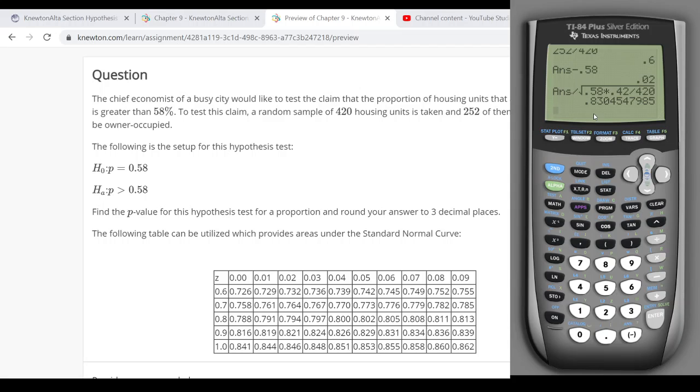So I'm getting a z-score, a test statistic of 0.83. Now this is a right-tailed test. The alternative hypothesis is simply that p is greater than 0.58. So this is a right-tailed test. I only need to find the area then to the right of my test statistic under that normal curve.